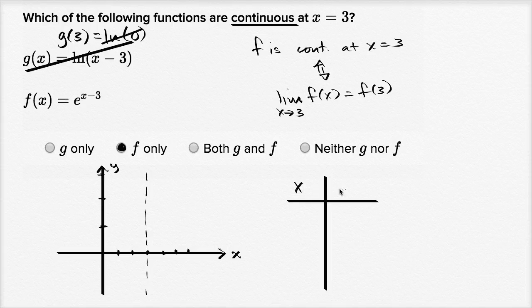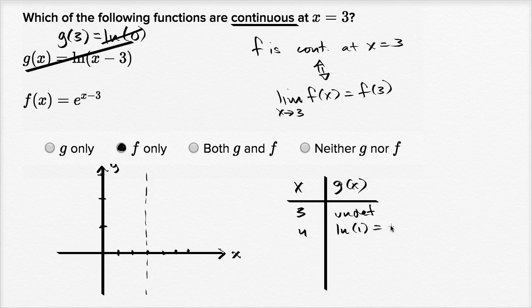So if I say x and I say g of x, so at three you are undefined. At four, this is ln of one, which is equal to zero. So it's right over there.